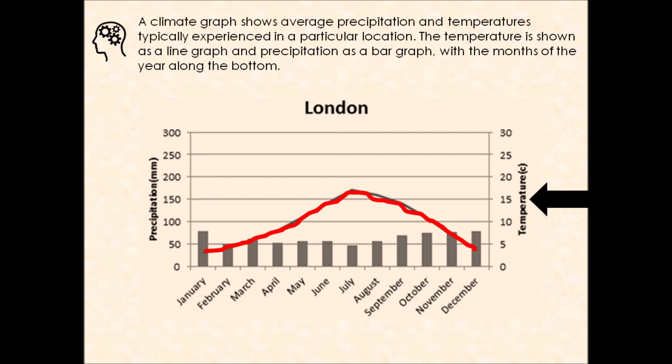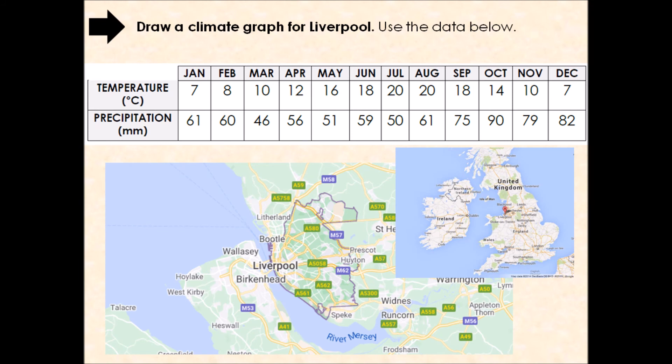We are now going to practise the skill of drawing a climate graph. I've chosen Liverpool in the northwest of England as our location — that's where my school is based and where I currently teach. I've given you some data on the worksheet and on the screen, and you're now going to draw a climate graph for Liverpool using this data.